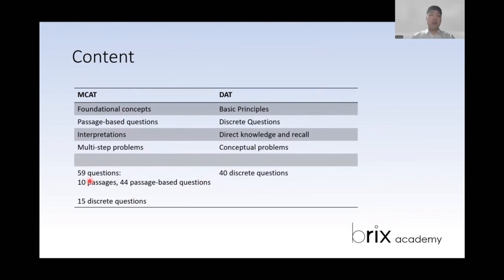The MCAT has 59 questions with 10 passages, 44 of them being passage-based questions and only 15 being discrete questions. Whereas the DAT only has 40 discrete questions.